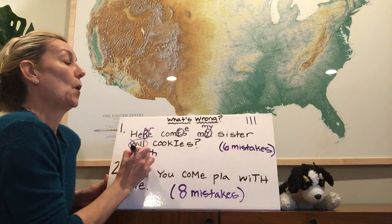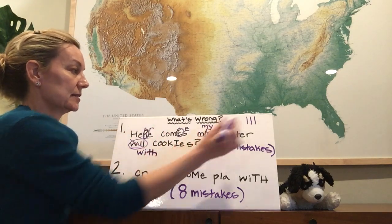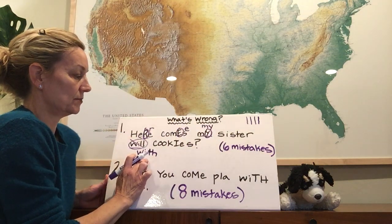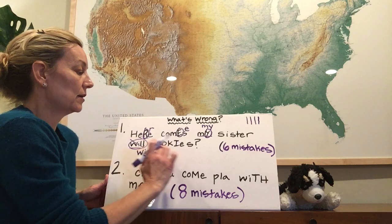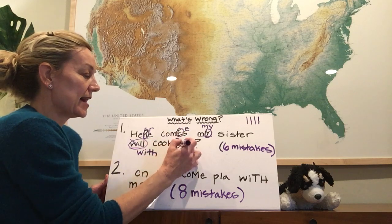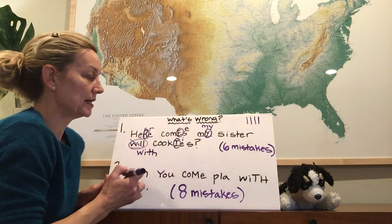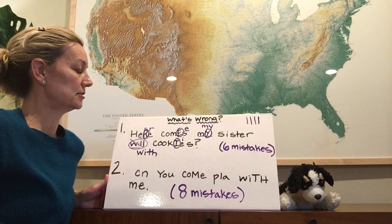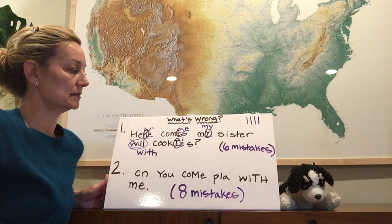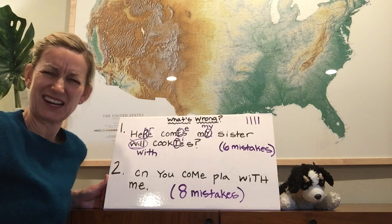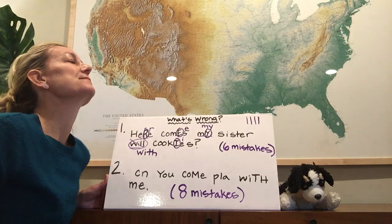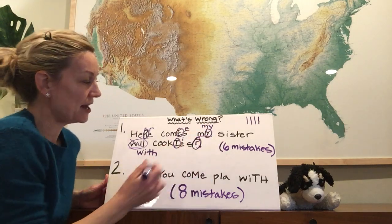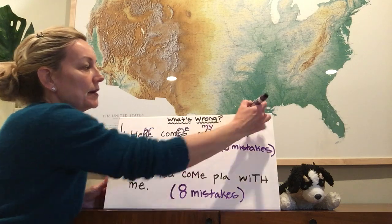Here comes my sister with cookies. I know I have four with this one here. There's two more. With — oh there it is. That I's too tall. That should be a lowercase I. That looks right. Here comes my sister with cookies. Wait a minute — is that a question or a statement? It's a statement. There's our last mistake. That should not be a question mark, but a powerful period.